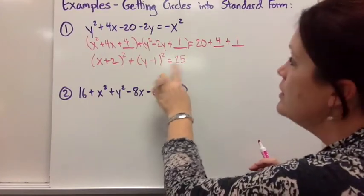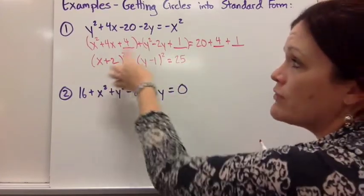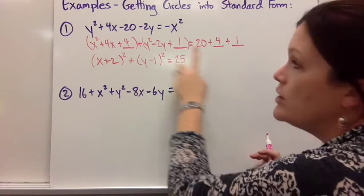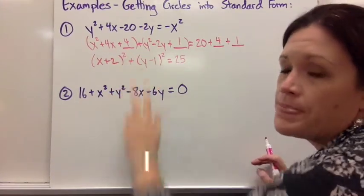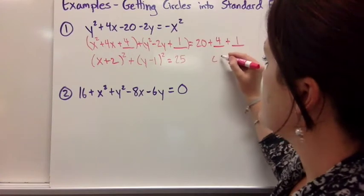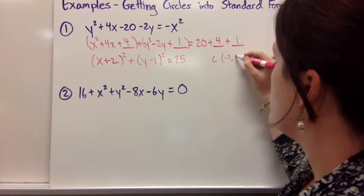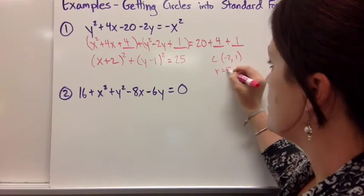So it looked like I was going to do a lot of work but really after that first step of organizing everything you complete the square to rewrite it in standard form. So now I can pick out my center point is (-2, 1) and my radius is 5.